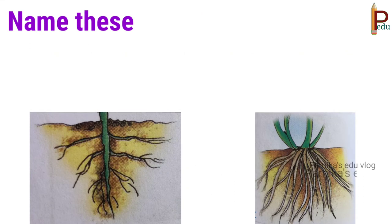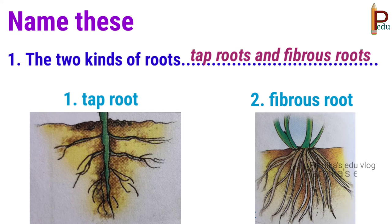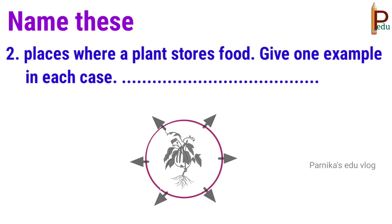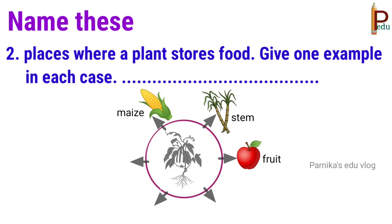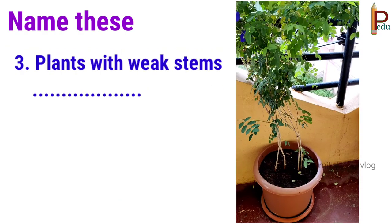Children, name the two kinds of roots. They are tap roots and fibrous roots. Next, name the places where a plant stores food, with one example in each case. A plant can store food in fruit like apple, stem like sugarcane, seed like maize, flower like broccoli, leaves like cabbage, and root like carrot.